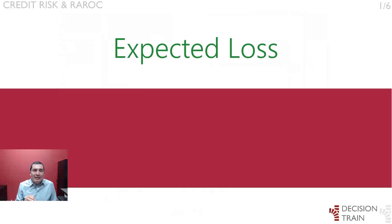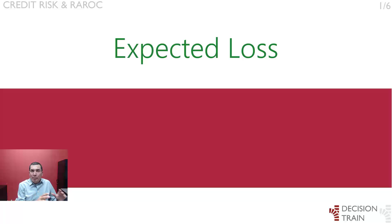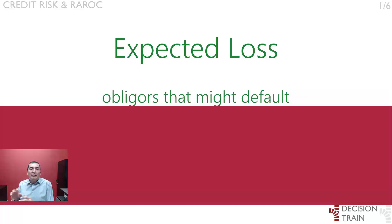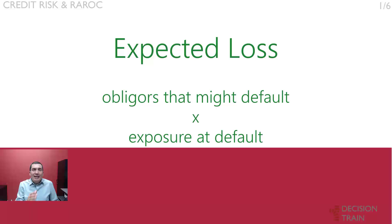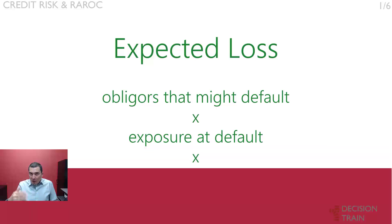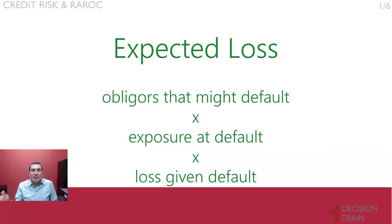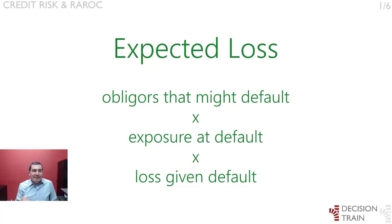So far, the expected loss has been regarded from a top-down perspective, that is, from a portfolio view. It can also be viewed bottom-up, namely from its components. The expected loss of a portfolio is assumed to equal the proportion of obligors that might default within a given time frame — one year in the Basel context — multiplied by the outstanding exposure at default, and once more multiplied by the loss given default rate, that is, the percentage of exposure that will not be covered by sale of collateral.